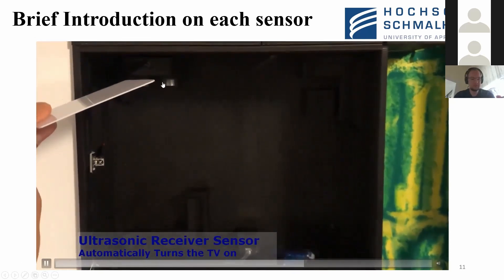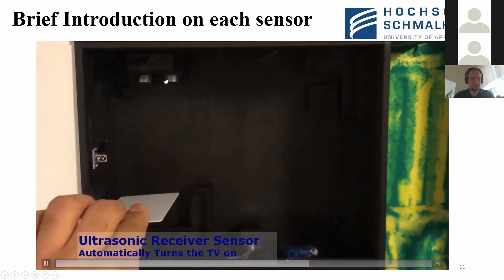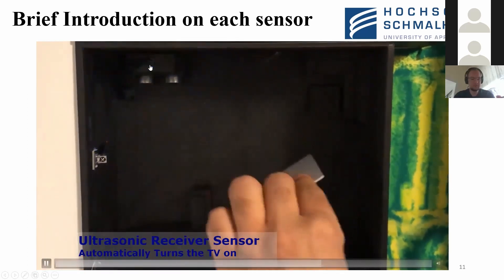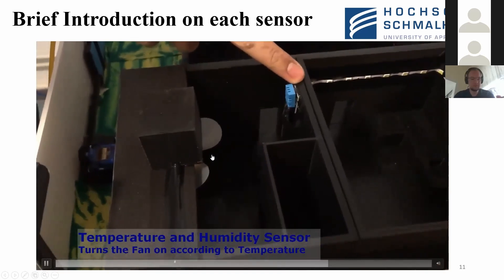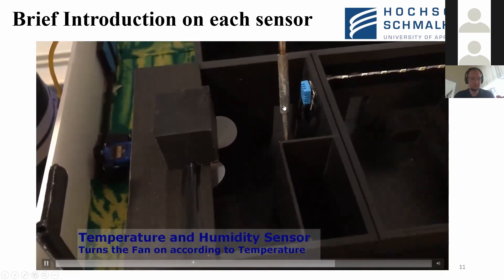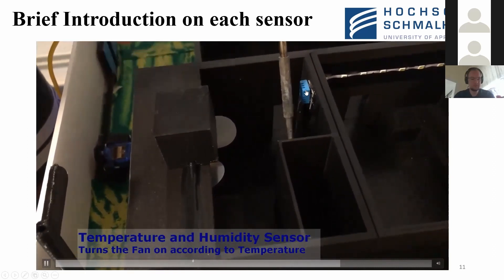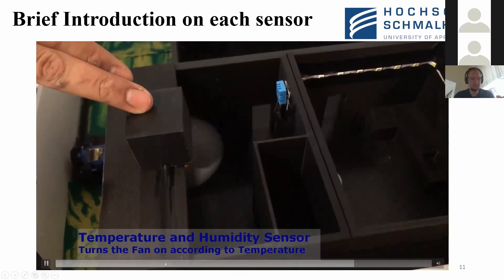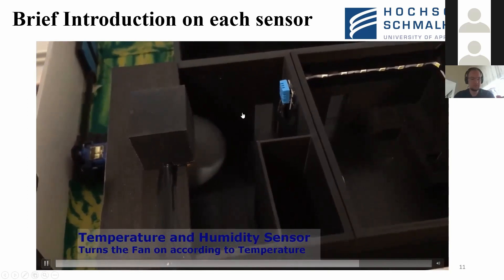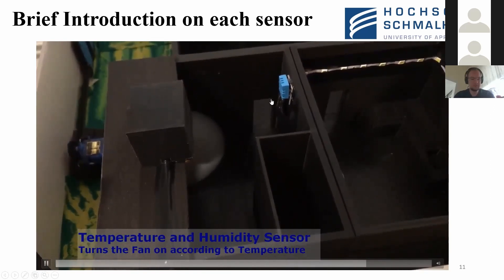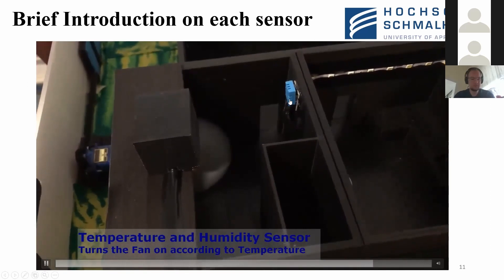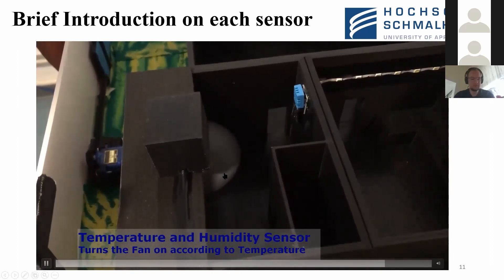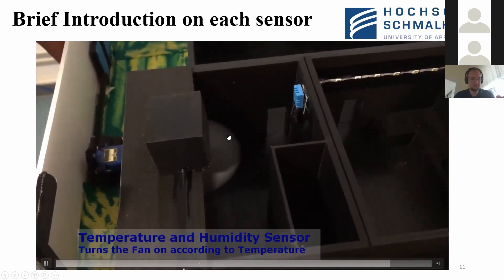This is the ultrasonic sensor used for the TV — once the person is standing or sitting in front of it, the TV LED automatically turns on; when they move away, the lights go off. I also have a temperature and humidity sensor, which I'm triggering with a heat source to reach 30 degrees Celsius. Once it reaches 30 degrees Celsius, the fan automatically goes on. As the temperature drops below 30 degrees Celsius, the fan will automatically go off.